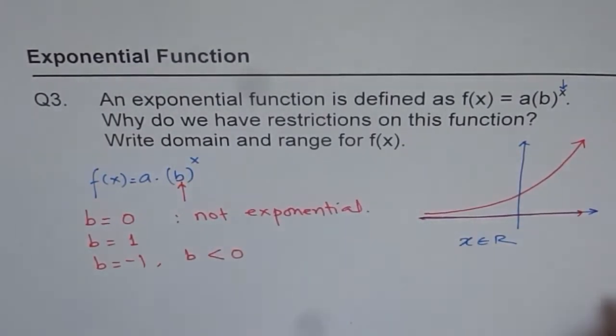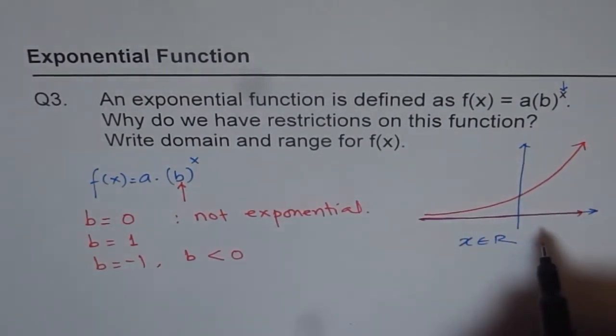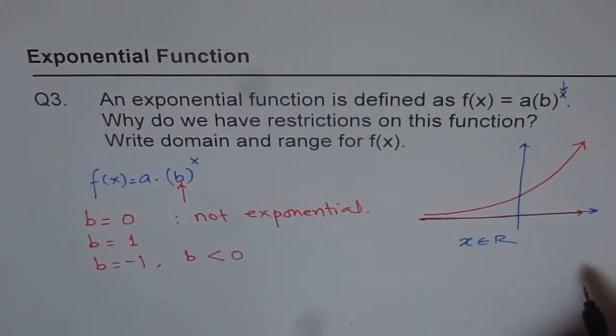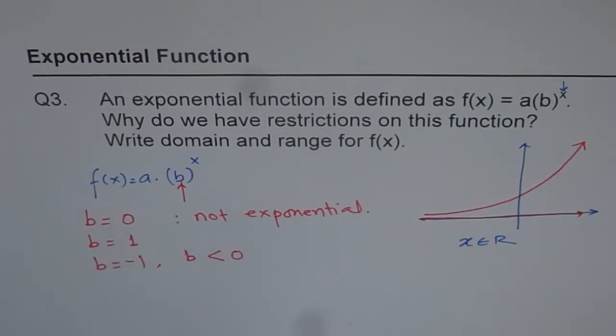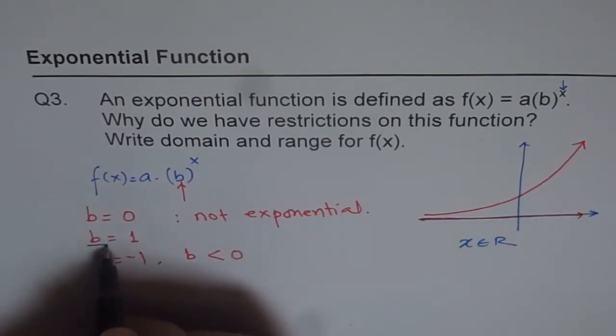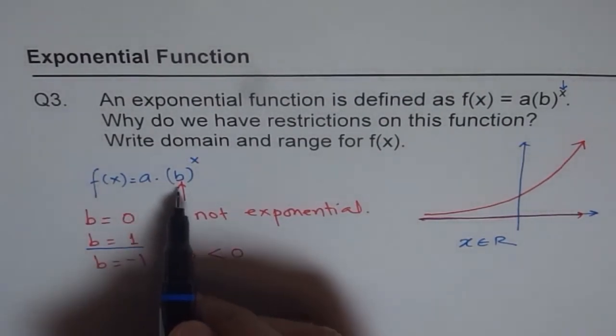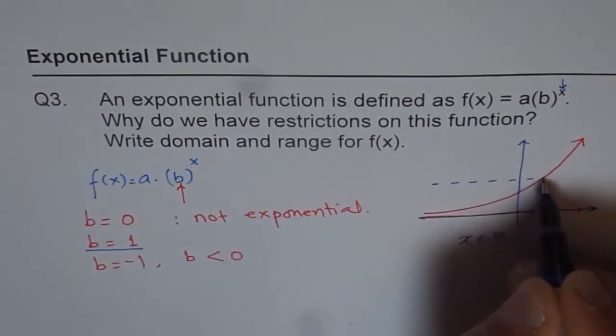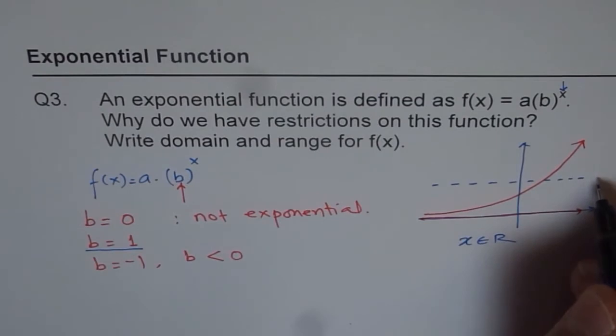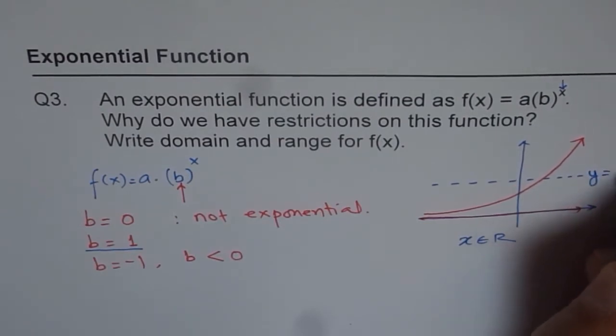It is of course a function. It represents x-axis. But it is not exponential. If I write b equals to 1, then what do I get? For b equals to 1, if I am doing a times b to the power of x and b is 1, then I get a line here.